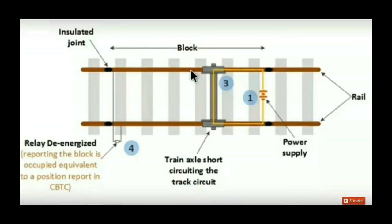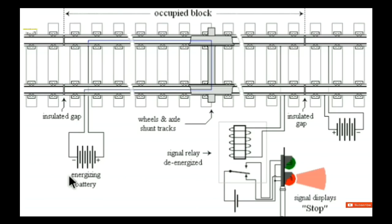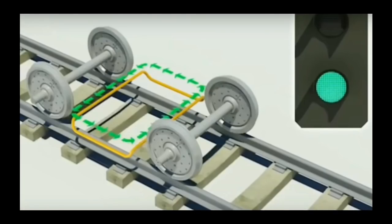Hi friends! How do we talk about this video? How do we talk about the railway tracking system? There is an interesting fact that everything is electric and there is no electronics automation.